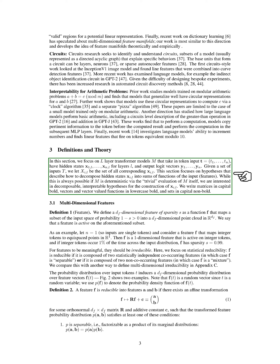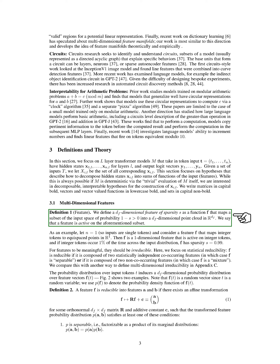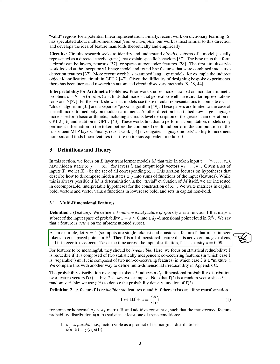We introduce the concept of multidimensional features. A D_F-dimensional feature of sparsity S is a function F that maps a subset of the input space, with probability 1-S greater than 0, to a D_F-dimensional point cloud in R^{D_F}. We say a feature is active on this subset. For instance, if N equals 1 (single tokens as inputs) and we have a feature F that maps integer tokens to equispaced points in R^1, then F is a one-dimensional feature active on integer tokens, with sparsity S equals 0.99 if integer tokens occur 1% of the time.